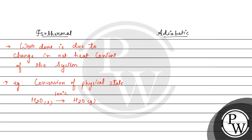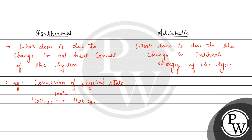Whereas in an adiabatic process, work done is due to the change in internal energy of the system. The work done equals the change in internal energy. For example, we can take any thermally insulated system — like a thermos flask whose walls are thermally insulated.